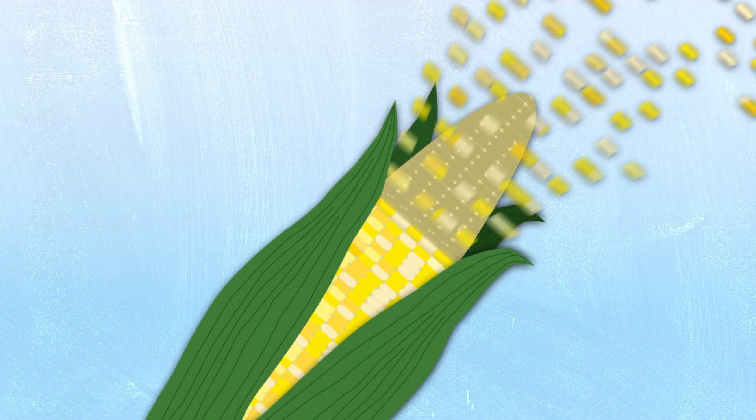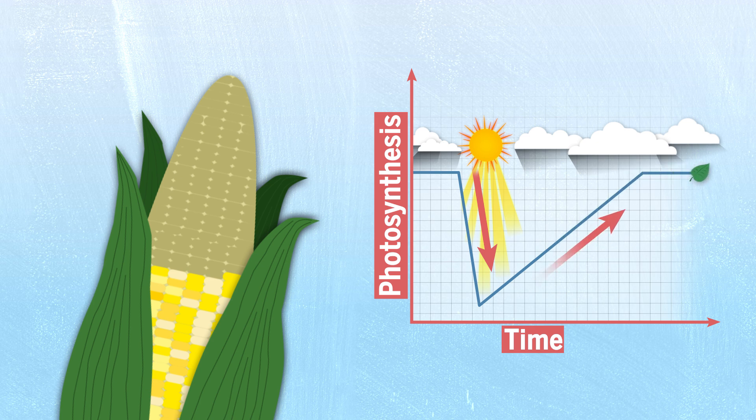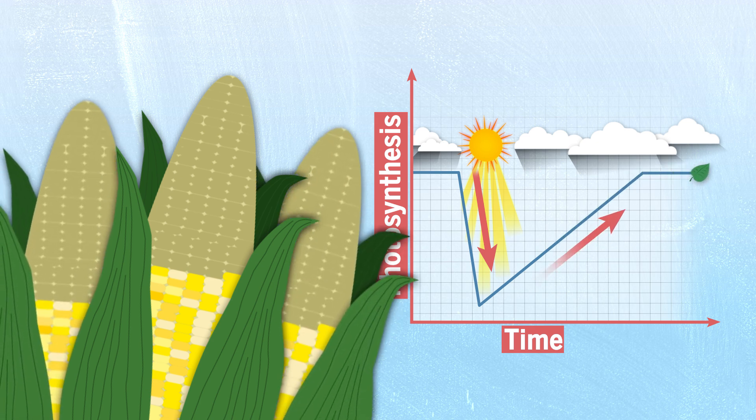It's estimated that 20% of plant productivity is lost to the slow ramp up in response to rapid changes in light. That's a lot of corn not made.